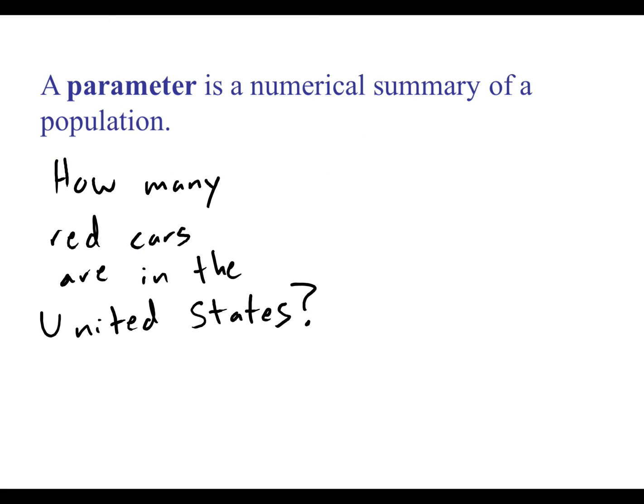In contrast to a statistic is another really important idea for this class, what's known as a parameter. Sticking with the car example, suppose we wanted to know how many red cars are in the entire United States. Well if you think about that, that's a number. And that's a number that describes the population. It's describing every single car in the United States. So that number is a parameter.